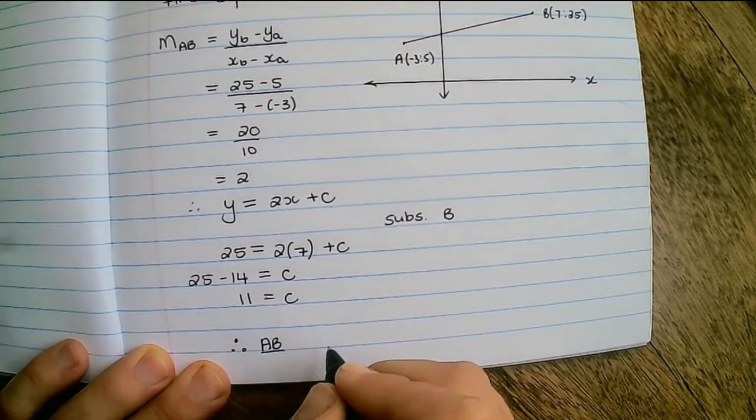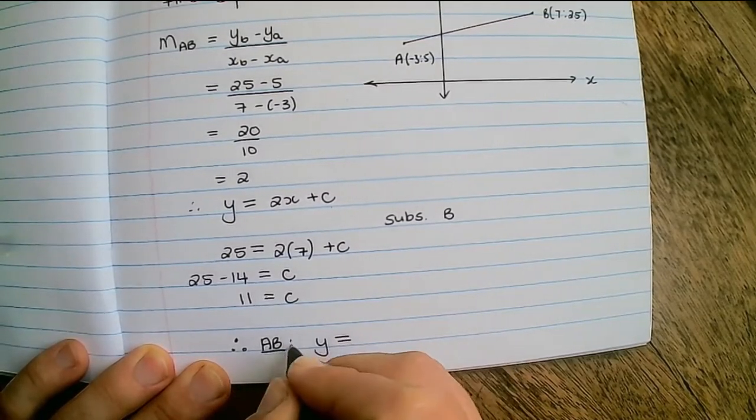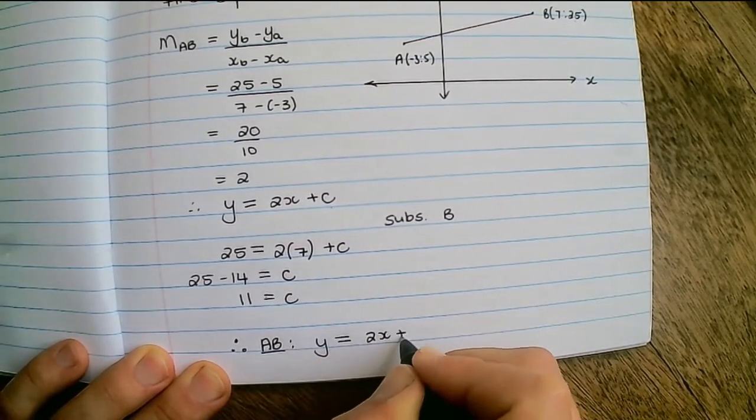The equation of line AB can be given as y equals 2x plus 11.